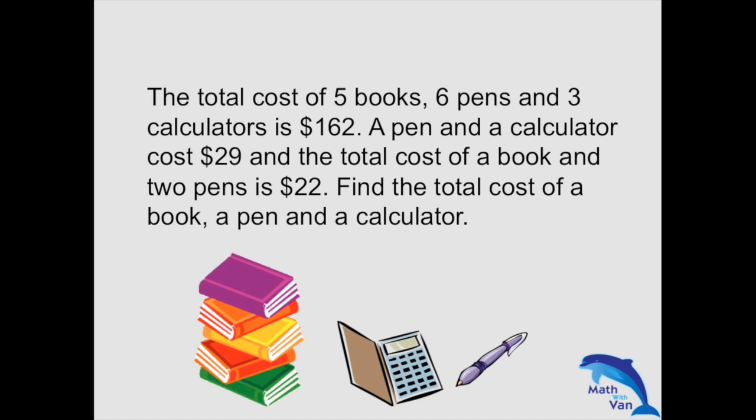Let's try this question. The total cost of 5 books, 6 pens and 3 calculators is $162. A pen and a calculator cost $29, and the total cost of a book and two pens is $22. Find the total cost of a book, a pen and a calculator.